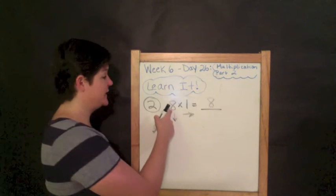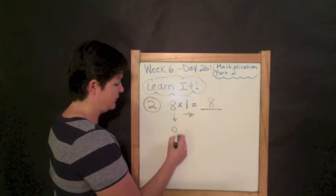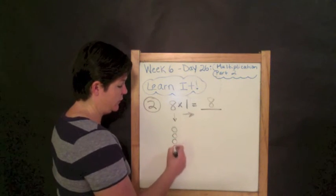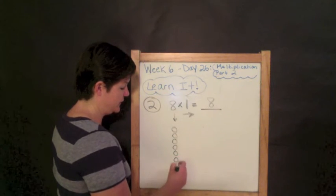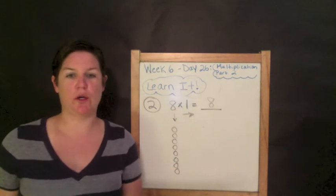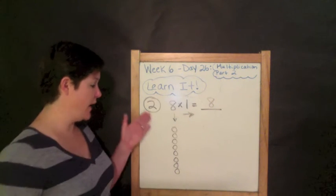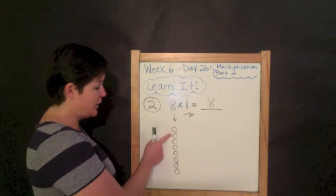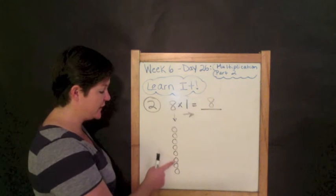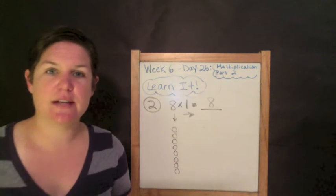So we're going to go eight down. One, two, three, four, five, six, seven, ocho. And one to the right. Well, I already have one. So how many do I have in all? One, two, three, four, five, six, seven, eight. Eight total.